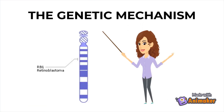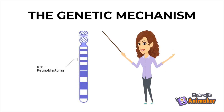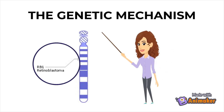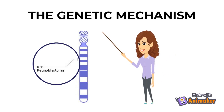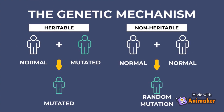Retinoblastoma arises due to mutations in the retinoblastoma gene, commonly abbreviated as the RB1 gene. This gene is located on chromosome 13 and encodes for a protein called retinoblastoma protein, which plays an important role in controlling the division of cells within the body. Retinoblastoma can be either heritable or non-heritable. In heritable retinoblastoma, the mutated RB1 gene is inherited from a parent and the mutation is found in all cells of the body, with each cell having one mutated RB1 allele and one normal RB1 allele.